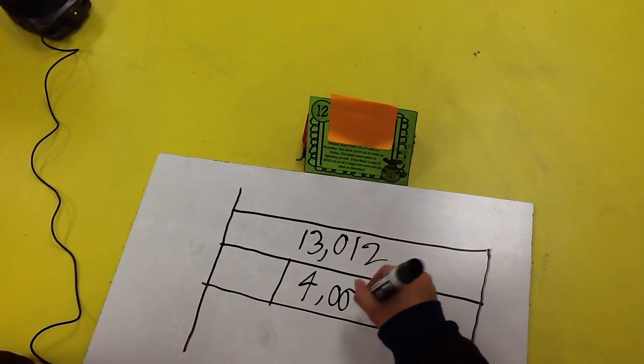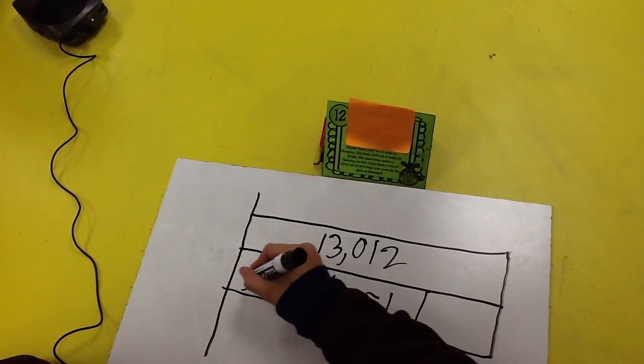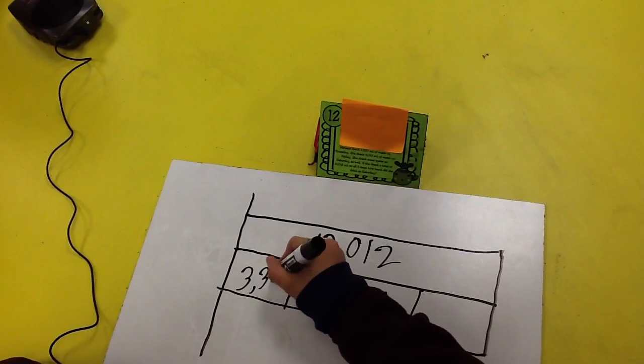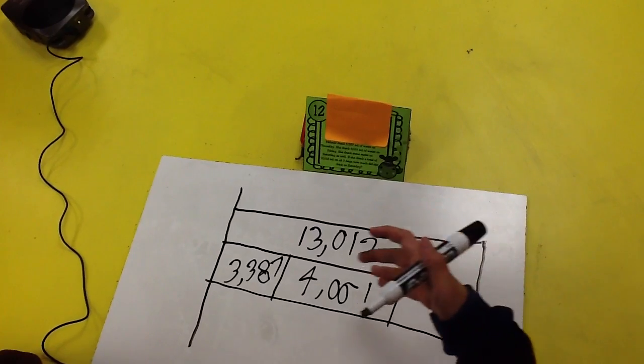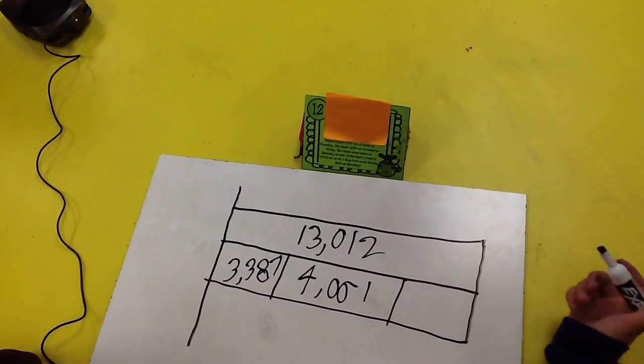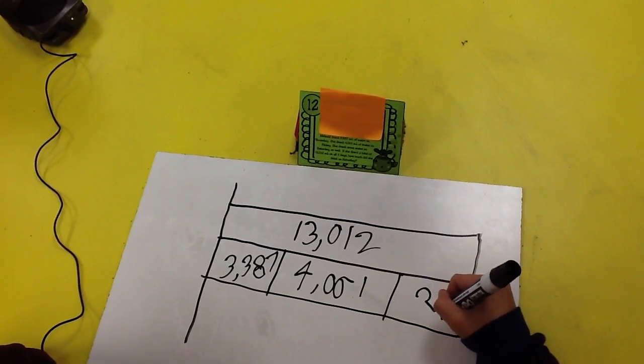I'll put 4,001 in one and 3,387 in another. And since they're smaller than the big piece, I need to put them in the smaller parts. But we don't know how much she drank on Saturday.